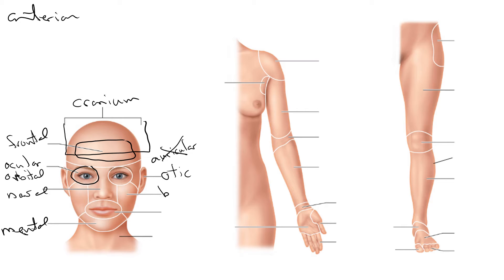The cheek is the buccal region. And then the mouth is the oral region. And then again from the front view, we have the cervical region — the neck.